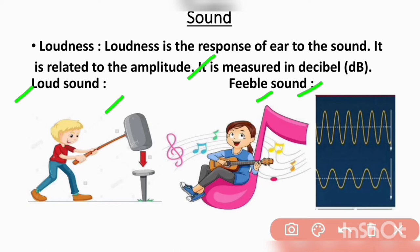To summarize loudness, there are two types: loud sound and faint sound. In loud sound, we have more amplitude of the vibrations — the height of the wave from the mean position is high, and we get loud sound. For faint sound, lower the amplitude of the vibrations, the sound is faint — meaning the height of the wave from the mean position is low, and we get faint sound.